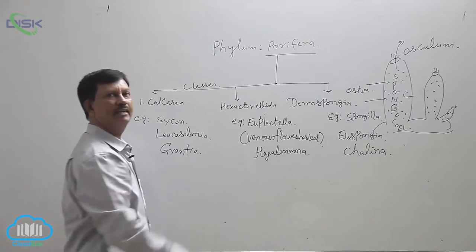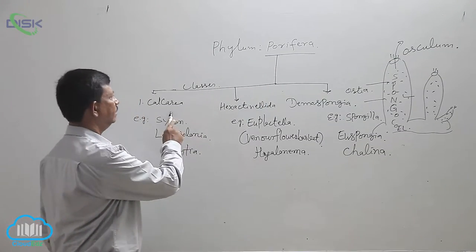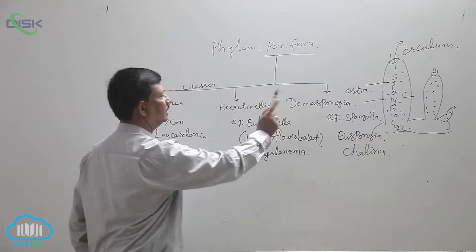Phylum Porifera is divided into three classes: Calcarea, Hexactinellida, and Demospongia.